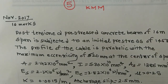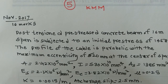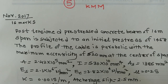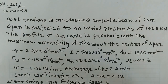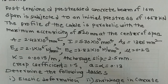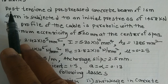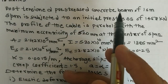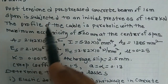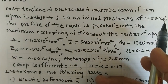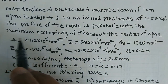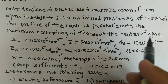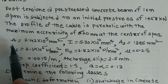Let us solve another problem related to pre-stress loss. The question was asked in November 2017 for 16 marks. The question is: a post-tension pre-stressed concrete beam of 16 meter span is subjected to an initial pre-stress of 1458 kN. The profile of the cable is parabolic with a maximum eccentricity of 520 mm at the center of span.